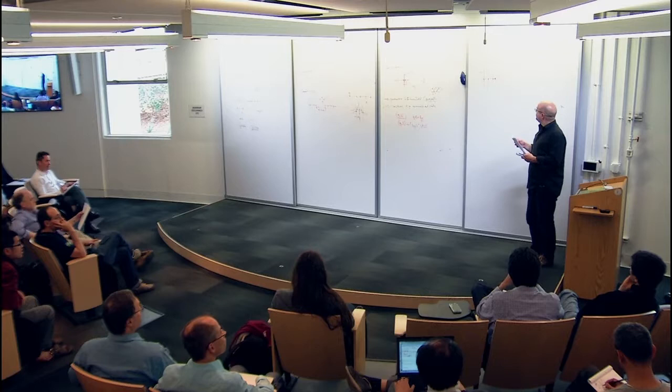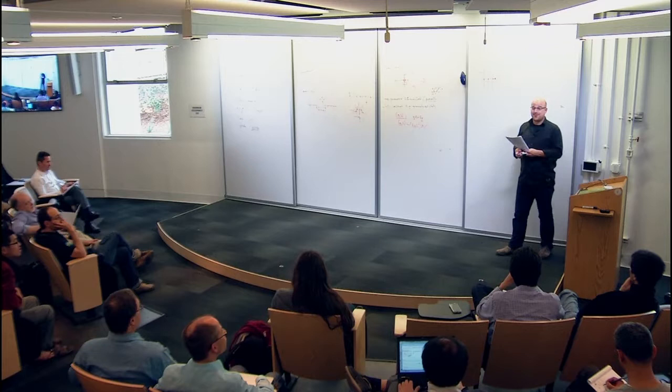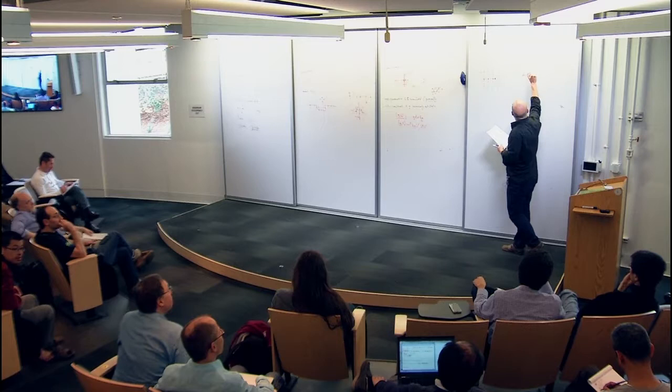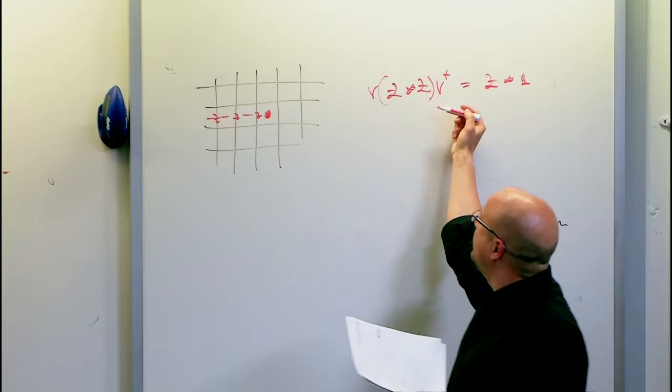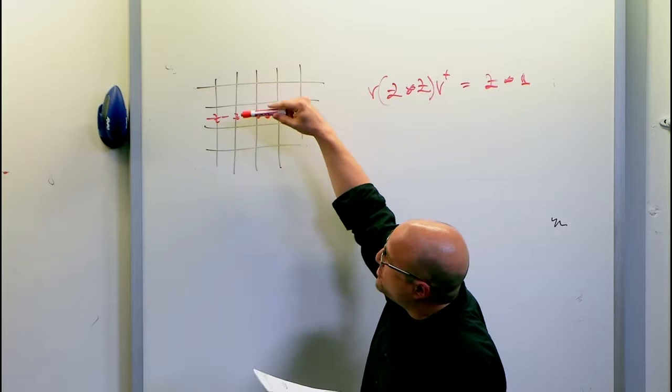There are actually many other things one can understand this way, for instance renormalization transformations. One can understand renormalization as the effect that there is a unitary which maps tensor products of this representation to a similar representation for Z tensor identity — these representations are actually isomorphic — which relates to the fact that we can renormalize these models.